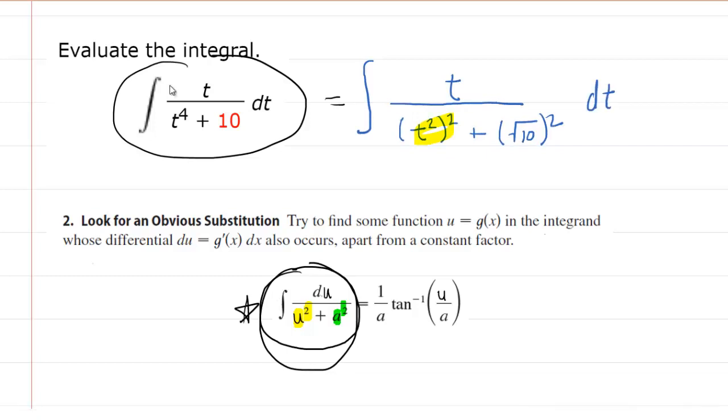That's just a little bit of rewriting to get the problem started. But we still have a problem here because the form that we desire doesn't have a variable in the numerator, and our expression does still have a variable in the numerator. So we have to make the substitution now.